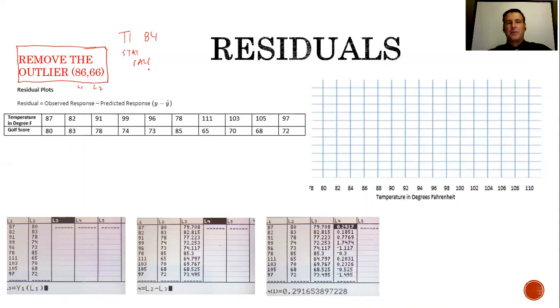You'll have to go to Stat and then Calc, and then we'll go down to 8, which is LinReg a + bx. Make sure you have L1 and L2 there, and don't forget the Y1 and store regression equation. That's really the most important feature. Take a minute and do that. Maybe hit pause first on this video, and then once you have that all fixed, you can return and we'll talk about residuals.